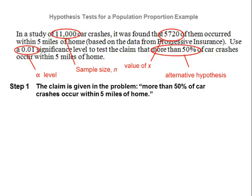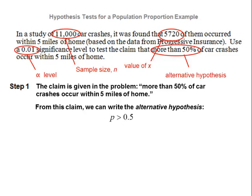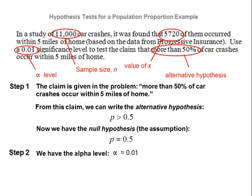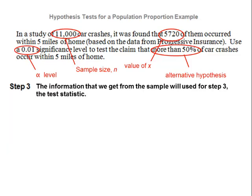Step number one: the claim is more than 50% of car crashes occur within 5 miles of home. Given this, we write the alternative: p is greater than 0.5. We also write the assumed value of p — the null will always have an equal sign, so p equals 0.5. Step number two: alpha is 0.01. Step number three: using the sample data, x is 5,720, n is 11,000, and p-hat is x divided by n — so 5,720 divided by 11,000 equals 0.52.